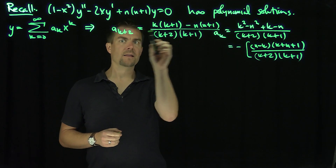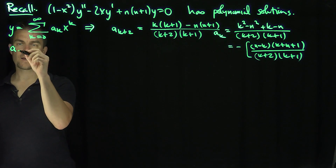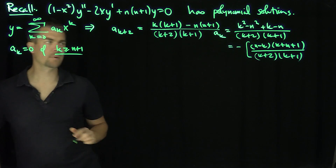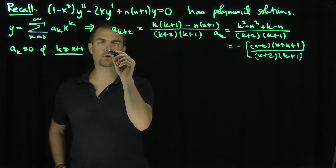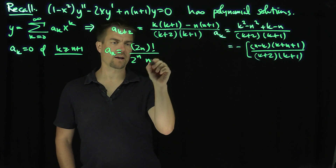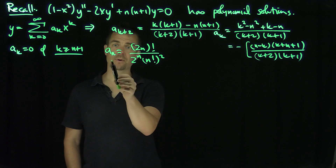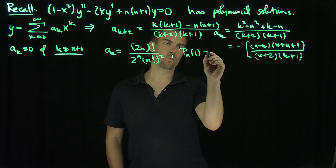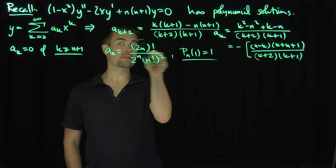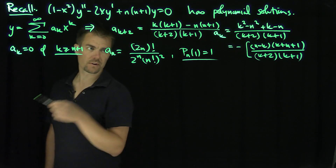If I plug in k equals n, then every term past a_n will be equal to 0 — in other words, a_k equals 0 if k is greater than or equal to n+1. Since there's an arbitrary constant involved, I'm going to choose a_n to be (2n)! over 2^n (n!)². This choice ensures that P_n(1) equals 1. You can leave this as an unknown constant and determine it at the end using combinatorics.